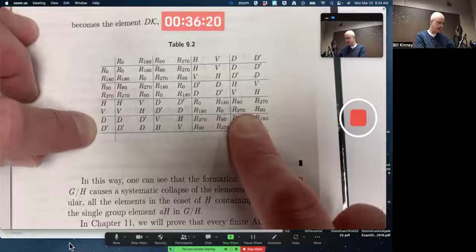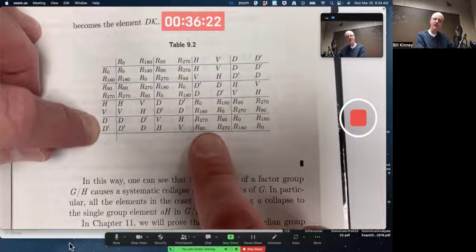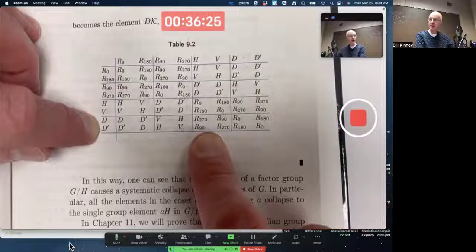And it's abelian. If you did it the other way around, it would be the same thing. D4 itself is not abelian, but this factor group is.